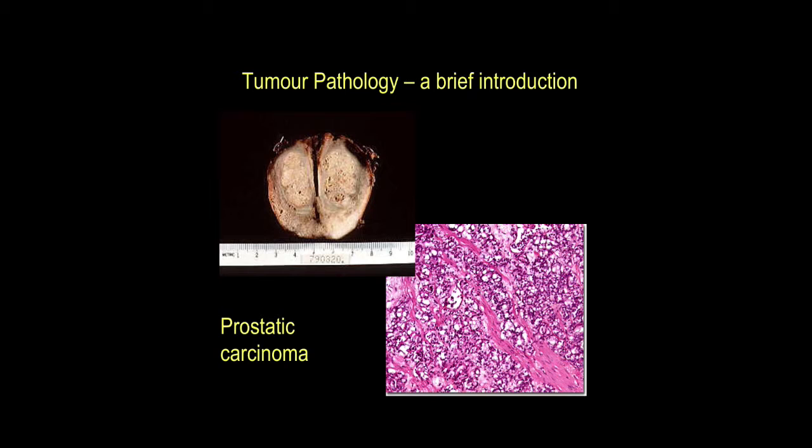When you take a biopsy from a particular organ, it's not guaranteed that the tumour comes from that organ. One of the challenges — but also interests — in tumour pathology is that tumours may present in other organs. So we can't assume their histogenesis purely on where the biopsy has been taken from, because they may have metastasised, spread from somewhere else.